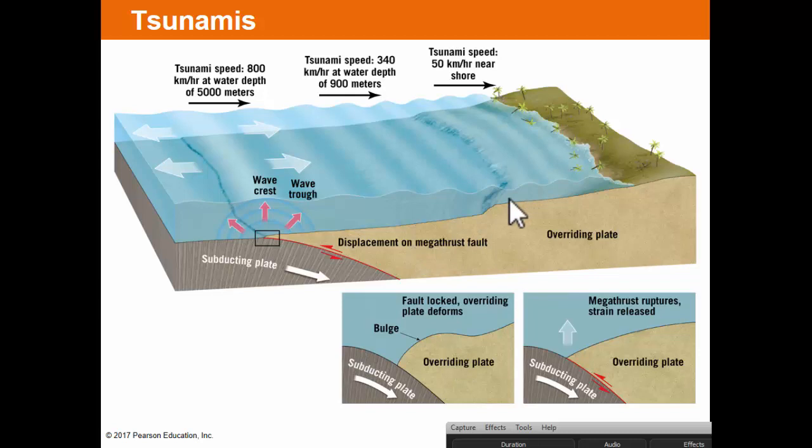The subducting oceanic plate pulls down the overriding continental plate at the trench — this is T1. Over time (T2), that overriding plate is bent downward, creating the subduction trench. Eventually, the frictional forces holding those plates together are overcome, and the continental plate literally springs back to its original position. All the ocean water above it gets lifted up and travels in both directions — inland and out across the open ocean. That is essentially how a megathrust fault at a convergent plate boundary creates a tsunami, with the displacement traveling at some 500 miles per hour.